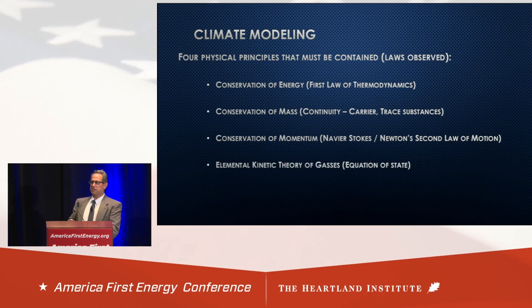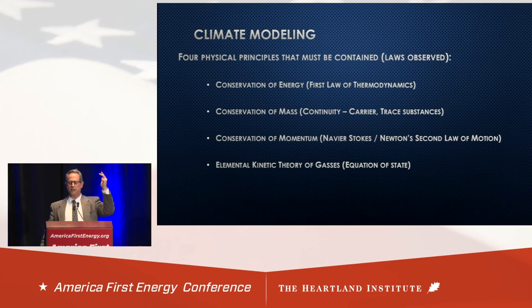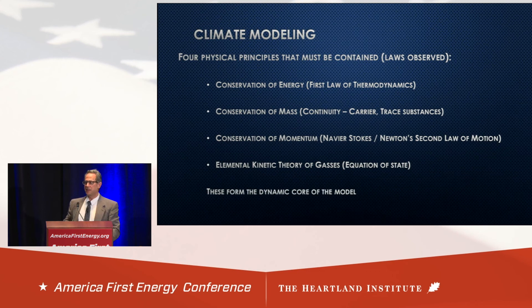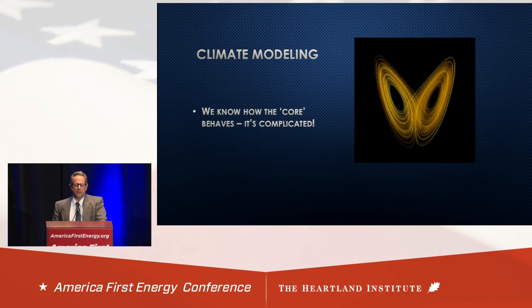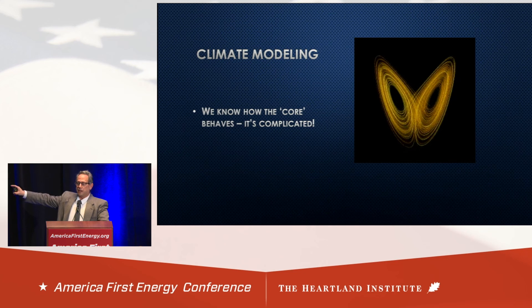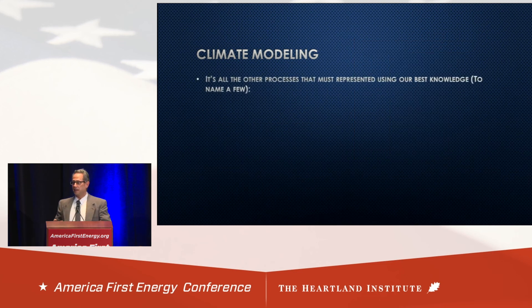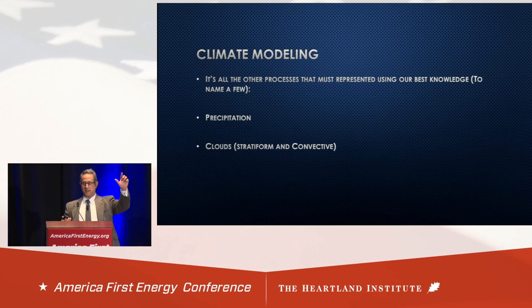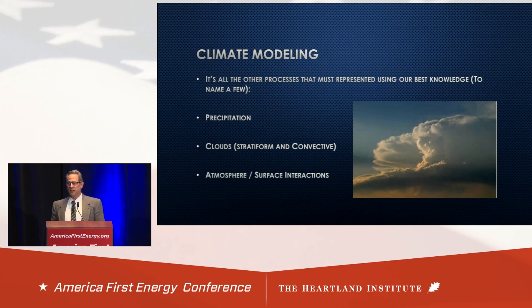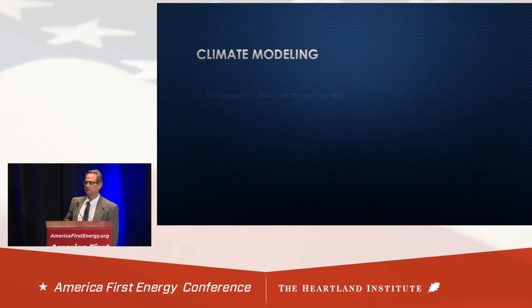Four principles must be observed: conservation of energy, mass, and momentum. These represent seven basic equations that form the dynamic core of the model. The model behavior is quite complicated — this was discovered when Ed Lorenz was trying to explain the behavior of the jet stream. Things that we have to fake, guess at, or parameterize include precipitation, clouds, and atmosphere-surface interactions.